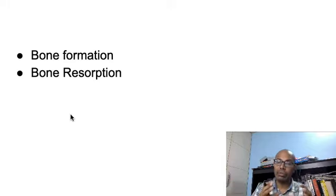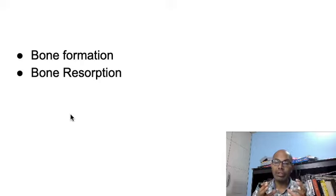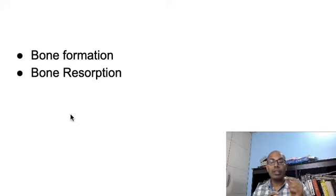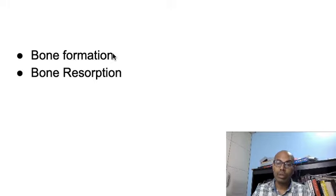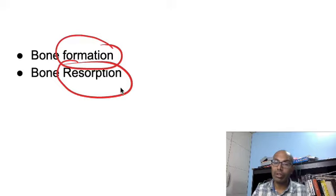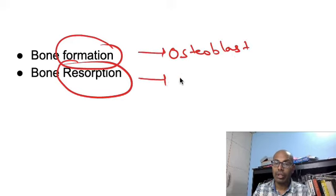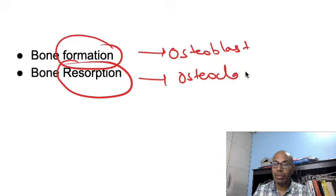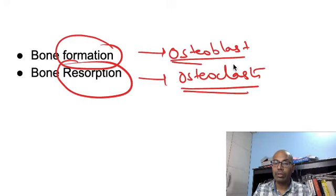Let us understand why the answer is osteoprotegerin. RANK ligand and bone metabolism are interlinked — bone formation and bone resorption are manipulated by the RANK ligand-osteoprotegerin mechanism. This concept must be very clearly understood because it's a very factual question. In bone remodeling, there are two processes: bone formation, done by osteoblasts, and bone resorption, done by osteoclasts.